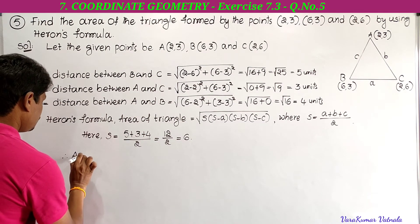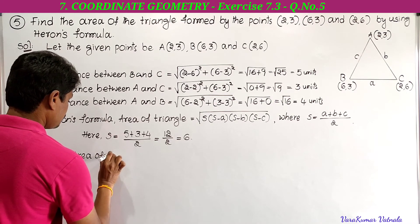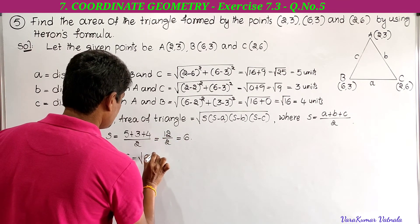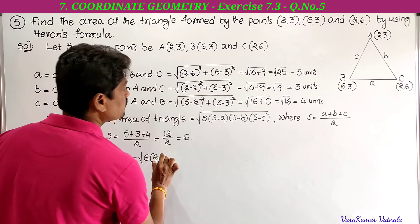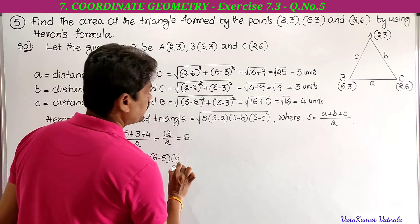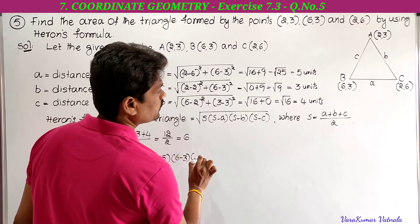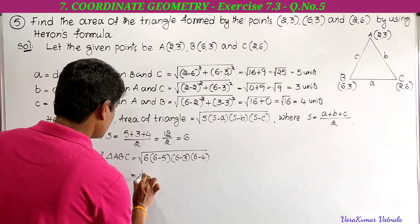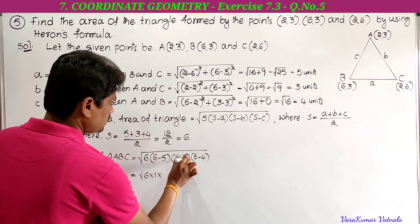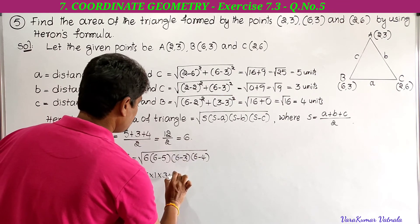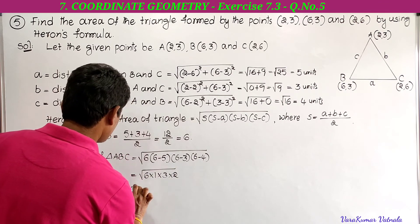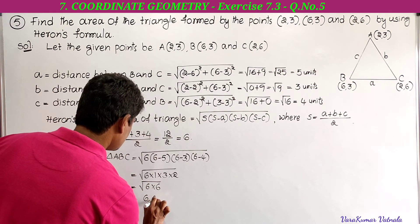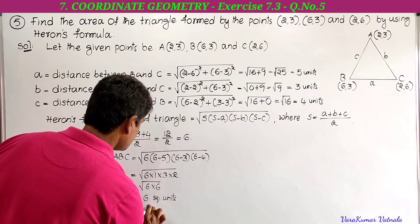Area of triangle ABC = √[s(s−a)(s−b)(s−c)] = √[6 × (6−5) × (6−3) × (6−4)] = √[6 × 1 × 3 × 2] = √36 = 6 square units.